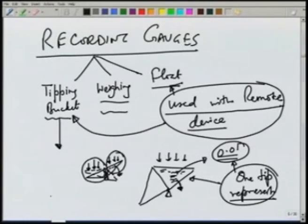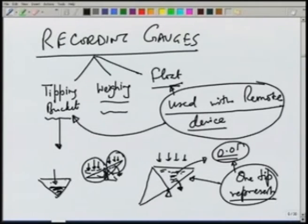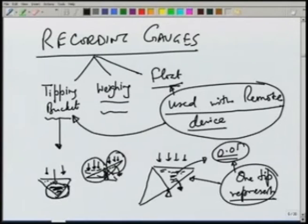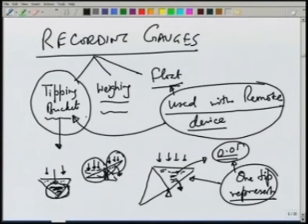If we have very big capacity, there is a possibility that it may not be filled completely during a light rain event, so that rainfall will not be recorded. When next time there is some rain which fills the bucket and tips it, the rainfall will be recorded as occurring at some other time. So, tipping bucket is a recording type of rain gauge because it will continuously record what is the time it takes to fill a certain capacity.